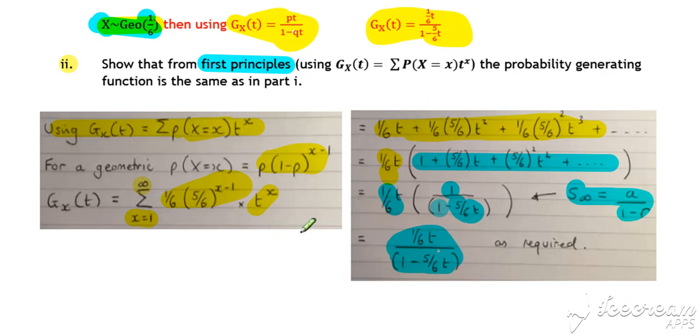But the same sort of process. It's just rather than having numerical values for the parameters, we leave the algebra in there. So you need to basically learn the first principles method for each of the different discrete distributions.